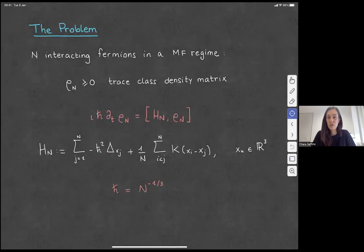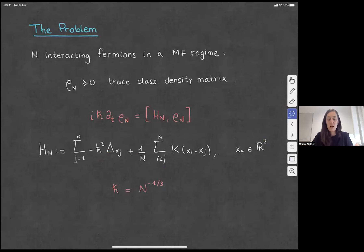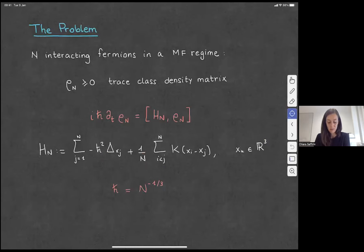So I'm looking at three-dimensional space, capital N fermions in this mean field regime. For fermions, this mean field regime is a bit special. If you know a little bit about mean field for classical particles or for bosons, you recognize this 1 over N in front of the interaction. But for fermions, because of energy considerations, this mean field comes coupled with the Planck constant. The number of particles N is going to be linked to the Planck constant by this relation: h-bar scales with N as N to the power of minus 1 over 3, where 3 is the dimension of the space.